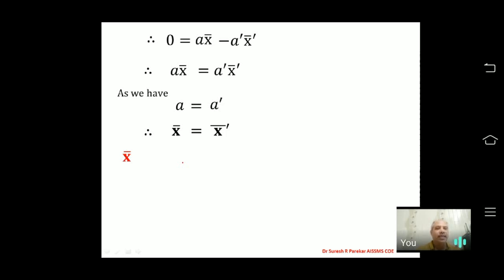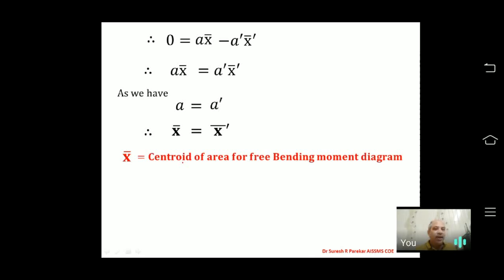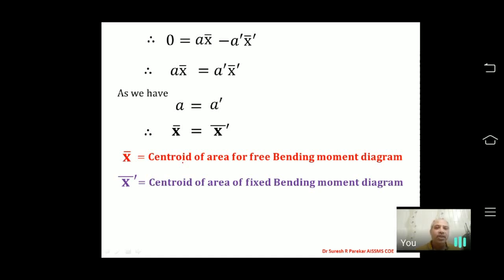We now have two equations: first, A = A', and second, x̄ = x̄'. Using these two equations we can determine fixed end moments for any problem, since we have two unknowns: MA and MB. If the beam is symmetrical about the center, MA = MB, so we need only one equation, A = A'. Otherwise, both equations are required. Here x̄ is the centroid of the free BMD and x̄' is the centroid of the fixed BMD.